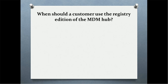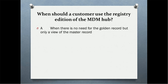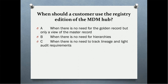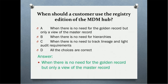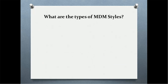Next question: when should a customer use the registry edition of MDM Hub? Option A: when there is no need for the golden record but only a view of master records. Option B: when there is no need for hierarchies. Option C: when there is no need to track lineage and light audit requirement. The correct answer is option A — when there is no need for a golden record but only a view of the master record.